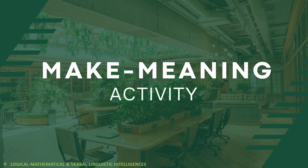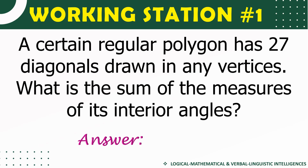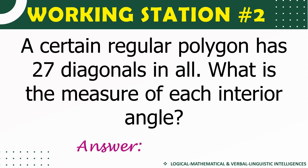Now for a short make-meaning activity — pause the video and try each problem, then resume to check your answers. Problem 1: A certain regular polygon has 27 diagonals drawn from any vertices. What is the sum of the measures of its interior angles? Answer: 1260 degrees. Problem 2: What is the measure of each interior angle? Answer: 140 degrees.